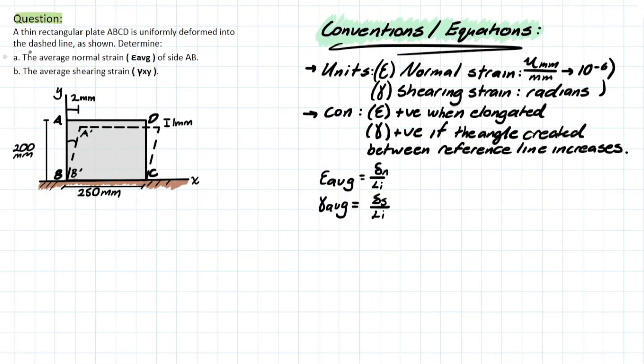So the question is going to go: we have a thin rectangular plate ABCD, which is uniformly deformed into the dashed lines as shown. It's asking us to determine the average normal strain, which is represented by epsilon average of side AB, and we're also asked to determine the average shearing strain, which is represented by gamma xy.